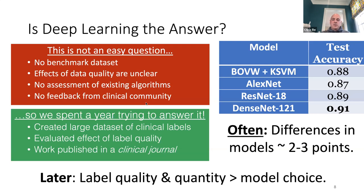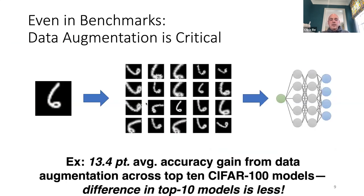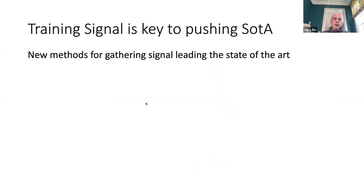Even on benchmarks like CIFAR-100, a very popular image benchmark, if you remove data augmentation from your pipeline you suddenly lose tens of points in accuracy — whereas models are fighting over one point here or one point there. Training signal is really key to pushing the state of the art in a lot of different areas and it is really important.